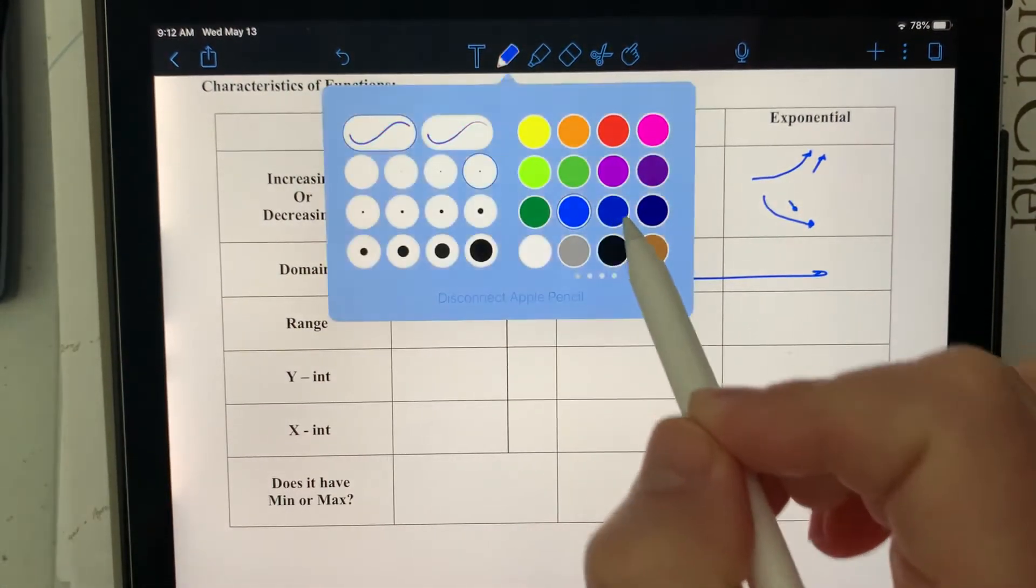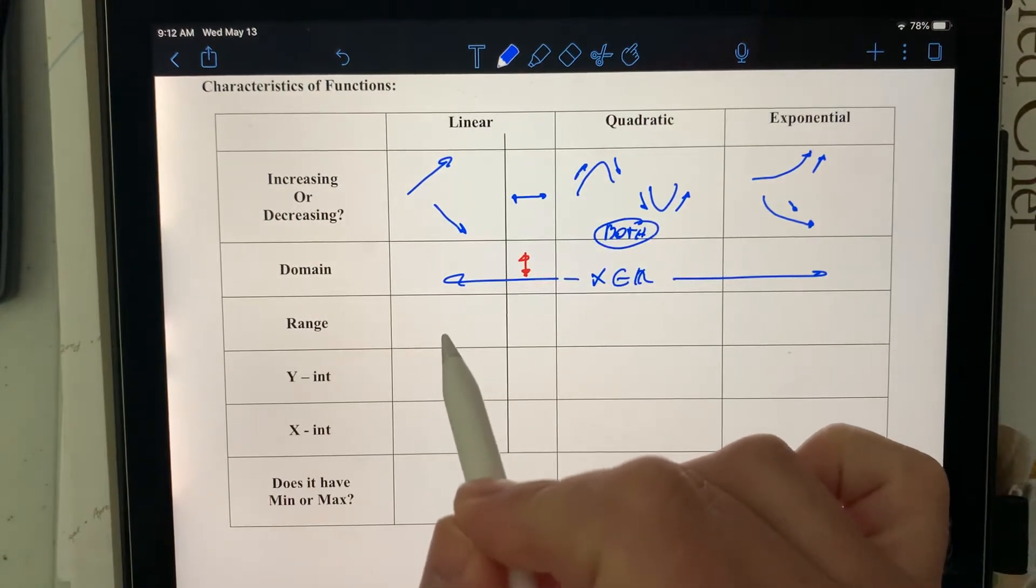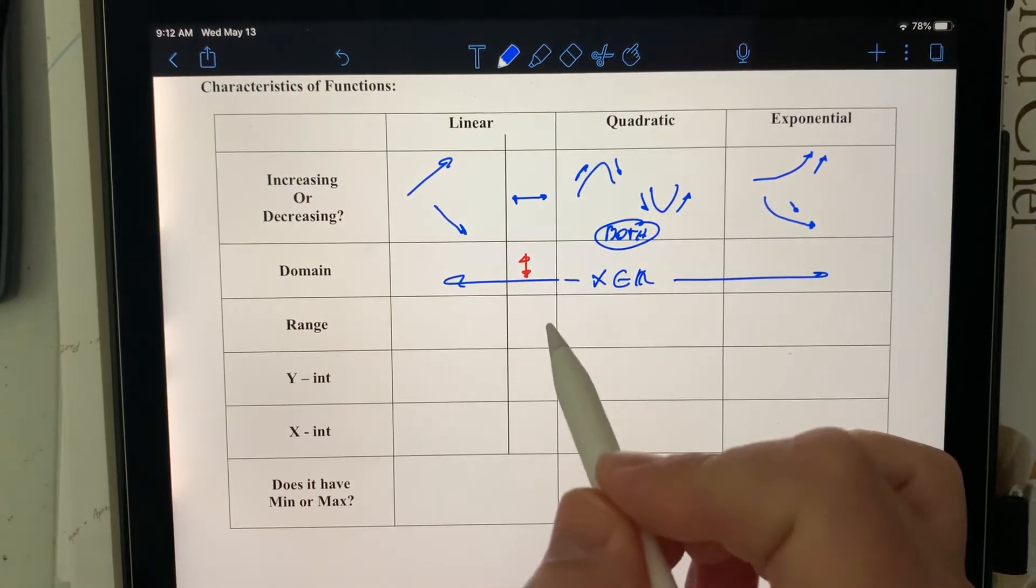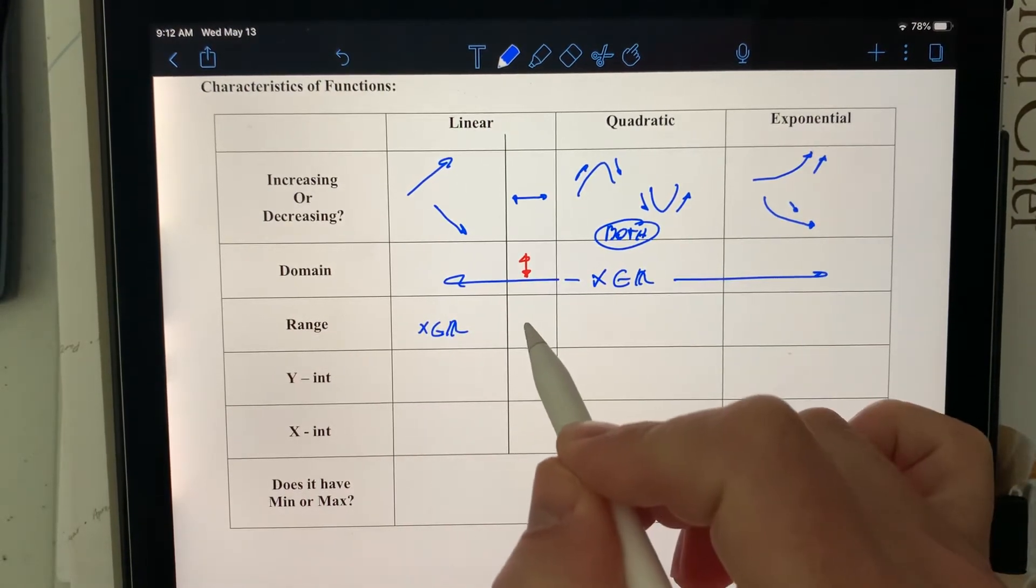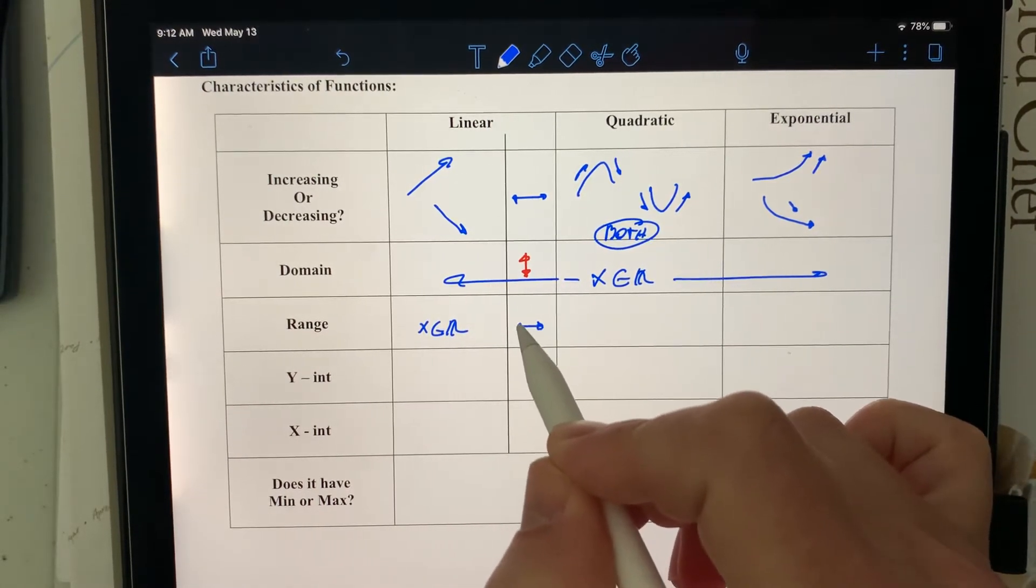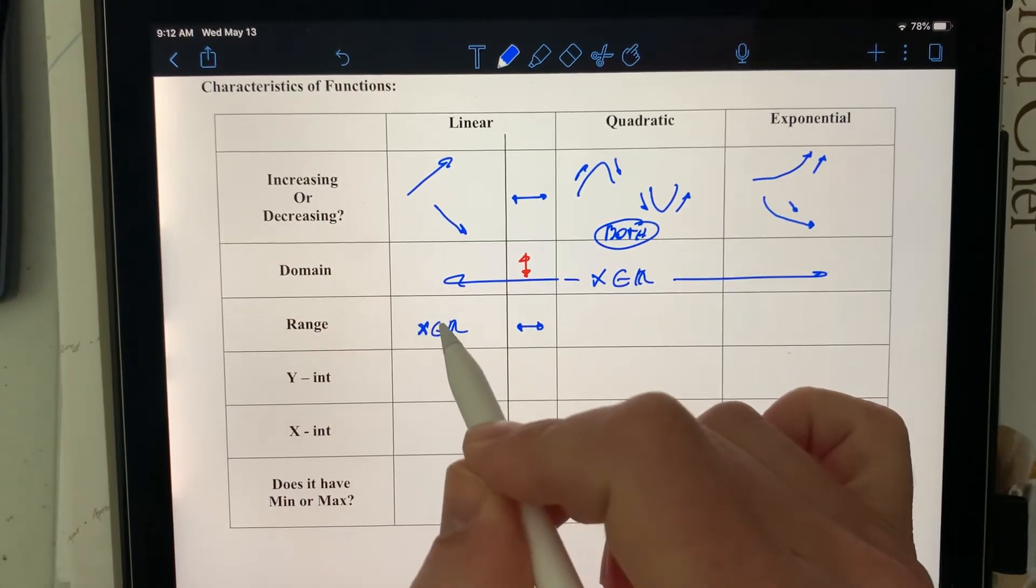Jumping to the range. Range for the lines, it goes up and down forever and ever for all of them, except for horizontal lines, which only have one value for range.